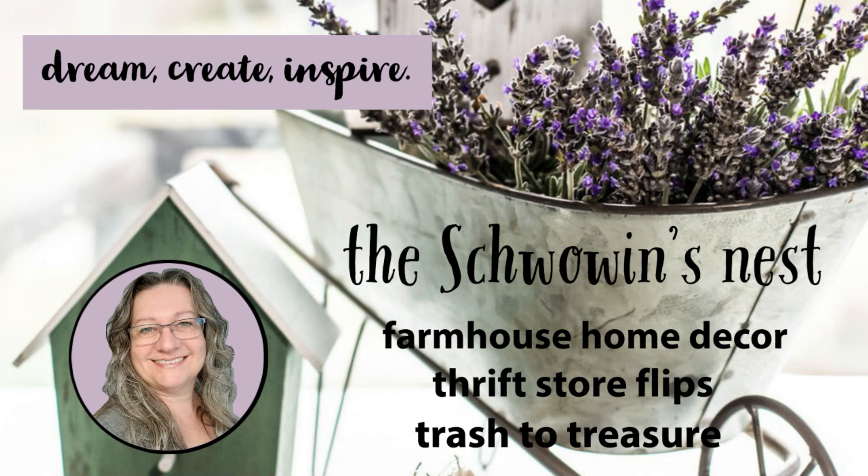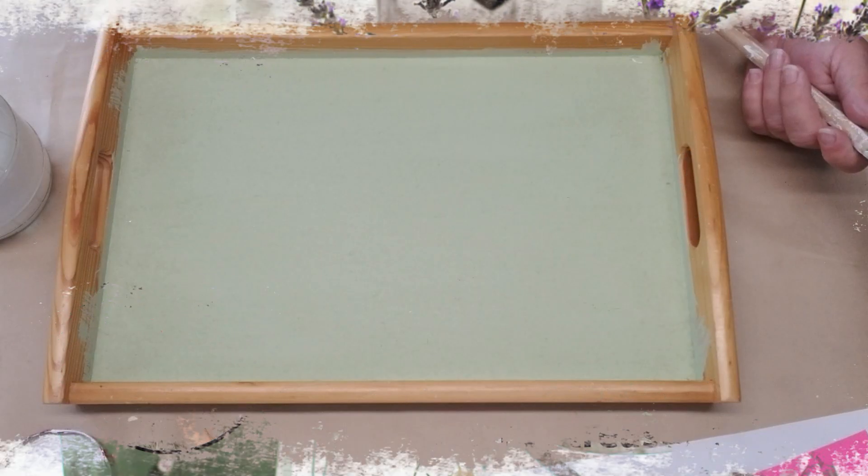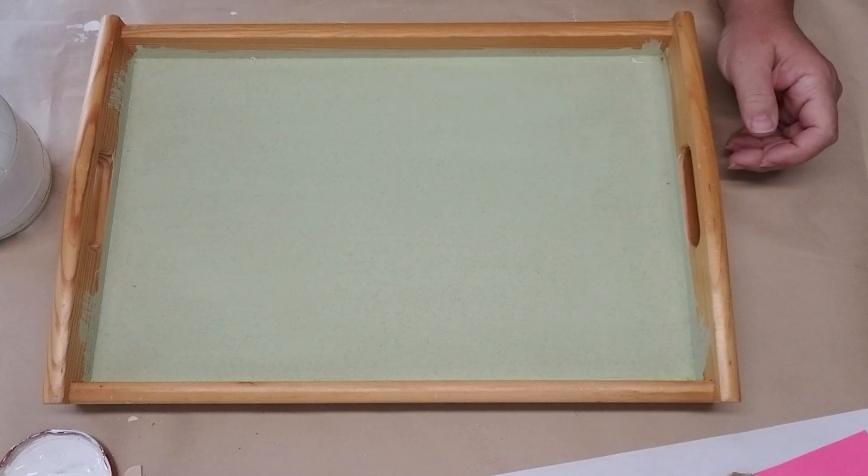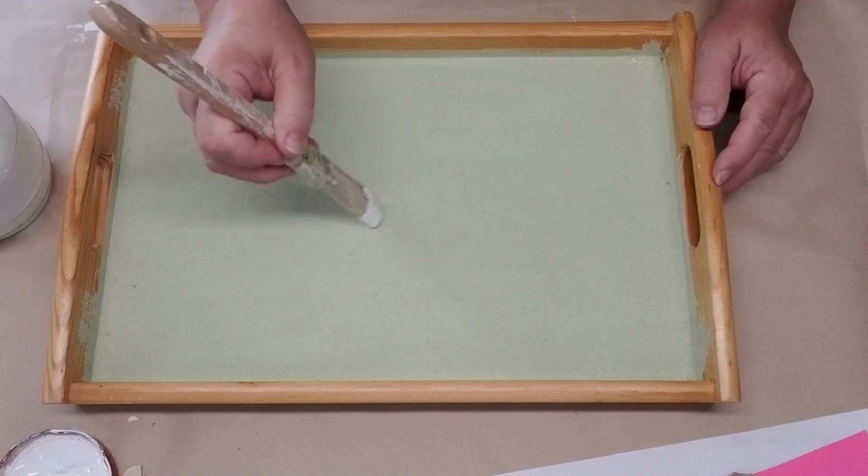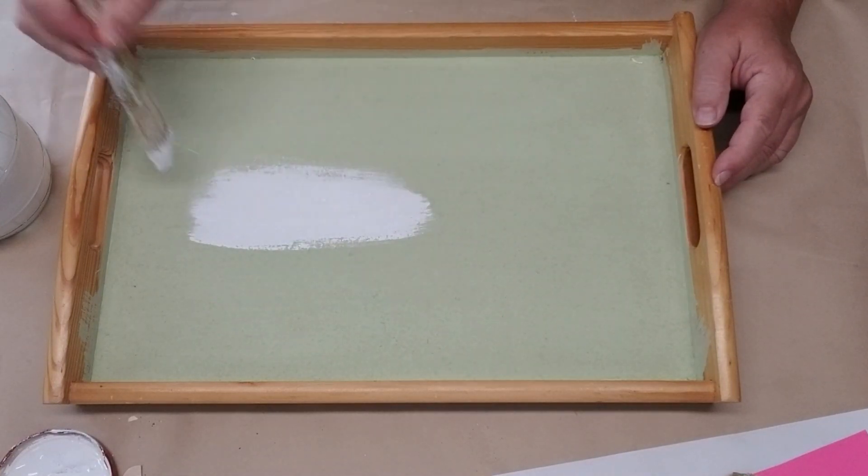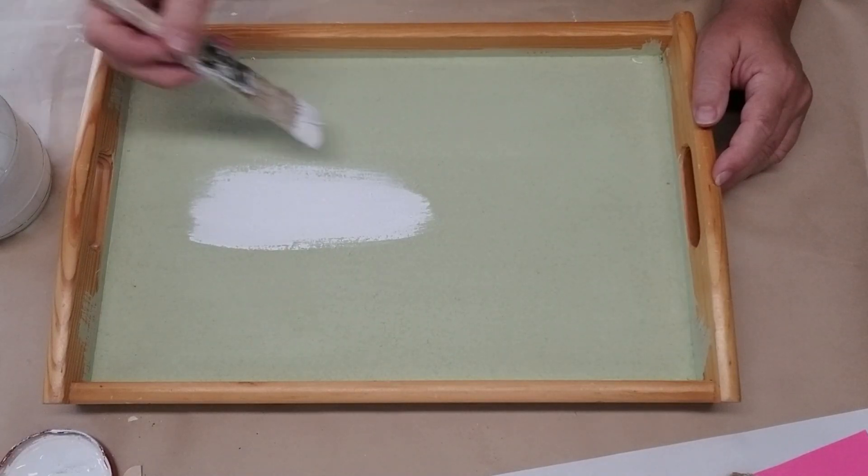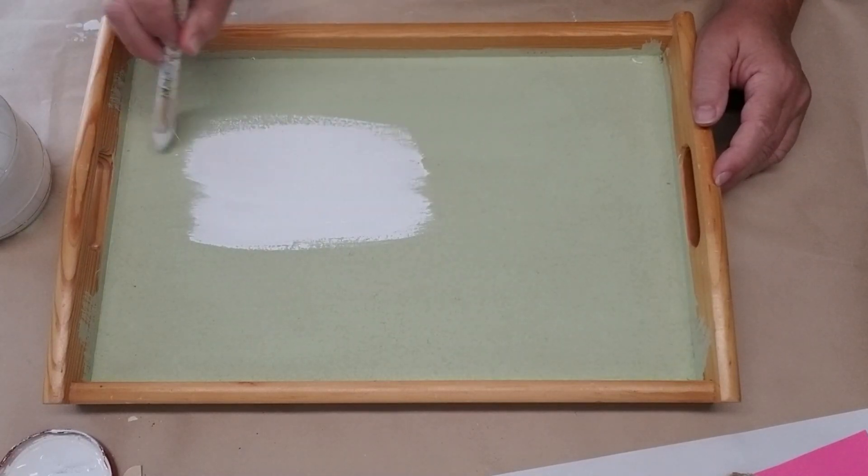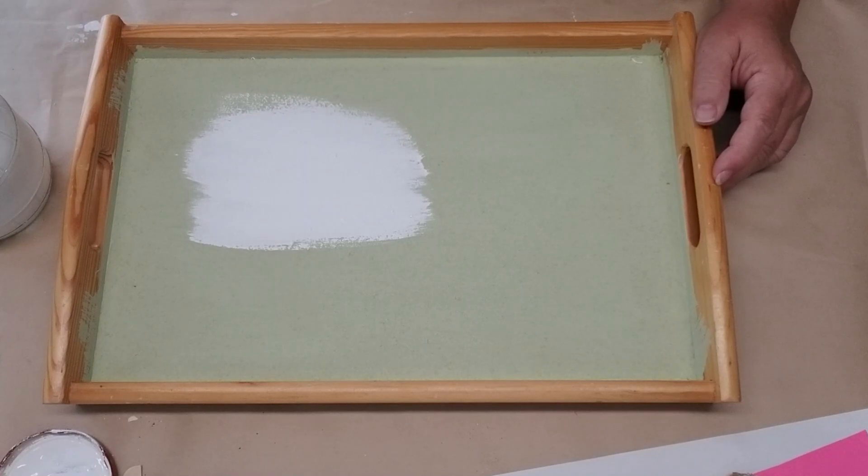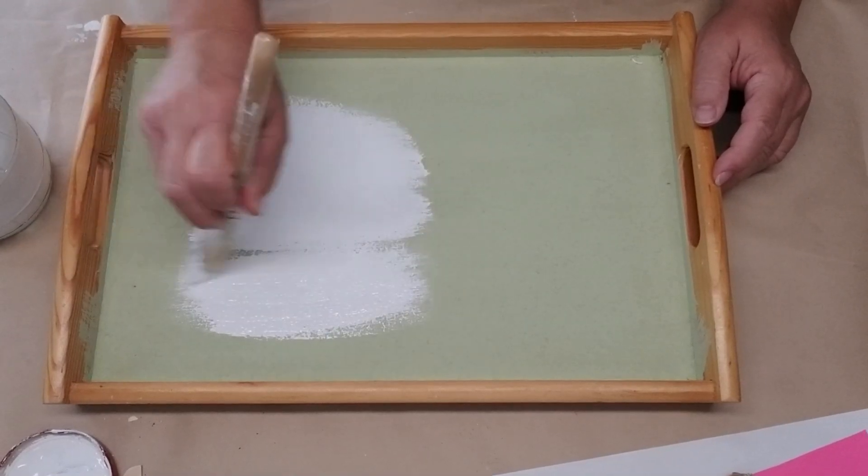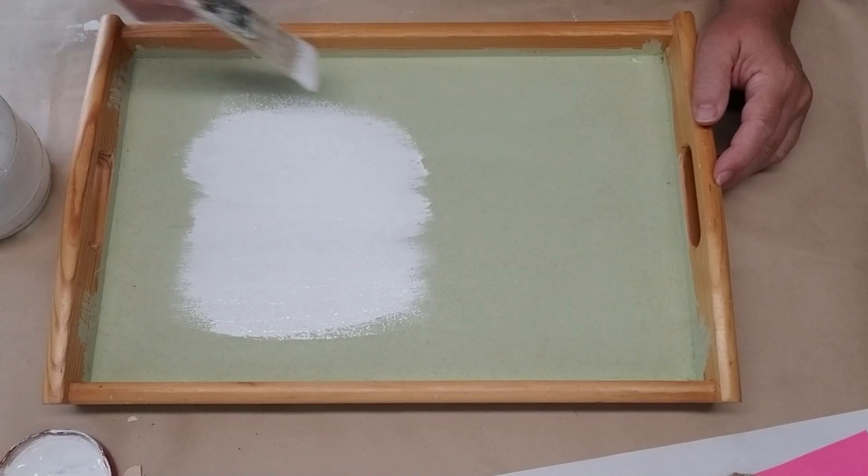Hi there, Sander here from the Shwoven's Nest. Thanks for joining me today. This tray I picked up at a thrift store for about $2.99 a while back. It has some green paint on it already. That was a project that I started and then abandoned for something different, so I thought it's time for this tray to get a real makeover.